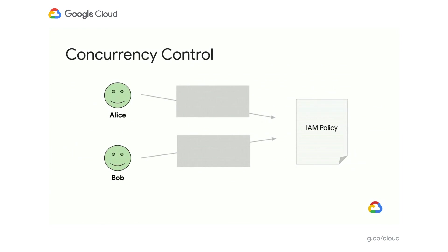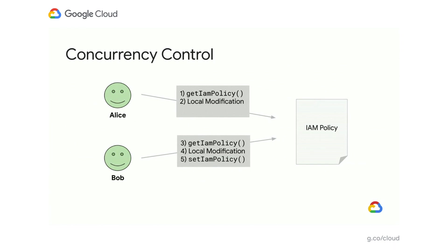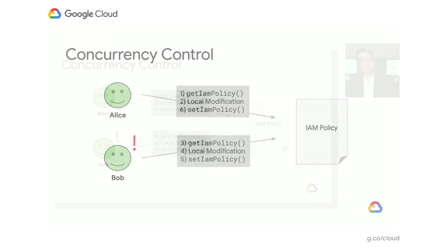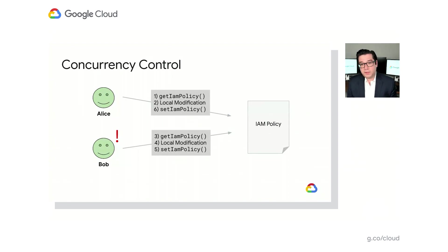Another best practice is ensuring appropriate concurrency control is in place for your policy modifications. Let's take a look at an example where Alice and Bob are both trying to modify a policy at roughly the same time. Alice executes get IAM policy as the start of her get-modify-set sequence. She or her code then begins making desired modifications to the policy locally. Bob then kicks off his get-modify-set flow by requesting the current policy and begins his local modifications. Bob's code then completes its changes and successfully sets the updated policy. Shortly after, however, Alice's local modifications are complete and her updated policy is set. Because the basis of Alice's local modifications was the result of a get IAM policy issued before Bob's set IAM policy, Bob's changes were effectively overwritten by Alice's set IAM policy.